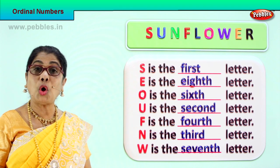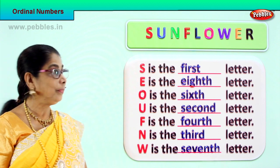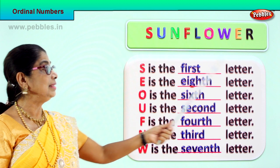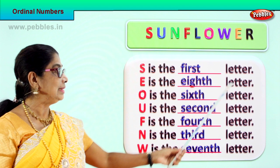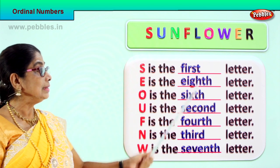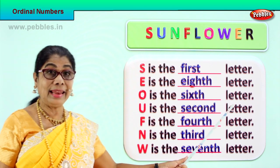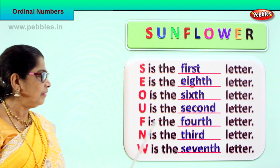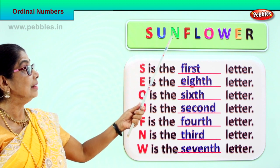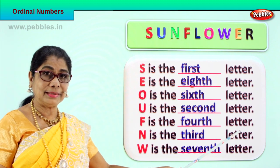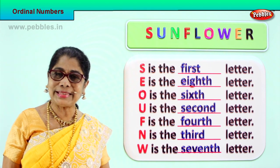We learned the ordinal position of each of these letters in sunflower. Let's read: S is the first letter. E is the eighth letter. O is the sixth letter. U is the second letter. F is the fourth letter. N is the third letter. W is the seventh letter. Did you enjoy this exercise?